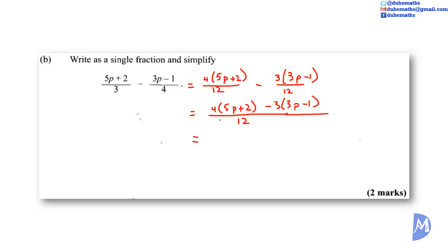Expand the brackets. 4 by 5b is equal to 20p. 4 by 2 is equal to 8. Negative 3 by 3p is equal to negative 9p. Negative 3 by negative 1 is equal to positive 3, all over 12. 20p minus 9p is equal to 11p. 8 plus 3 is equal to 11, all over 12. And we can factorize the numerator to remain with 11 times p plus 1 over 12.